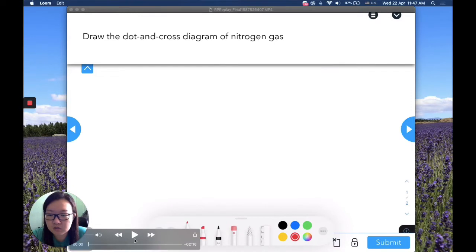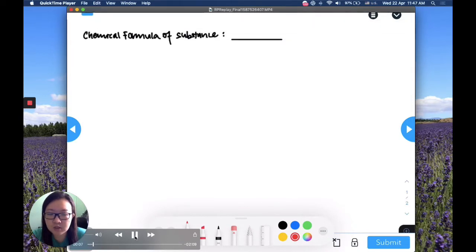So with that understanding, you can start to draw your dot and cross diagram. Very quickly I'm just gonna write down what I just said. Nitrogen at room temperature exists as a gas and it is N2 molecule, nitrogen gas. So based on understanding, you can then know the chemical formula which is N2.